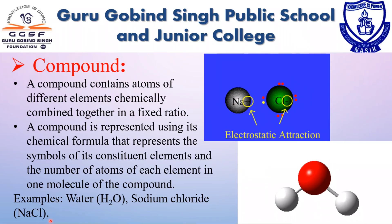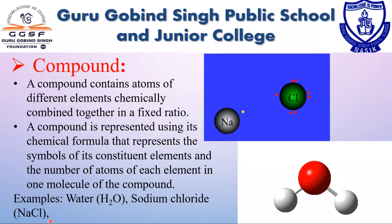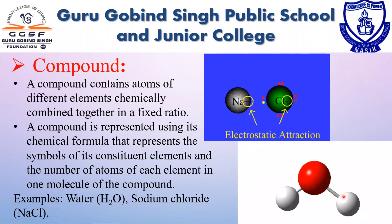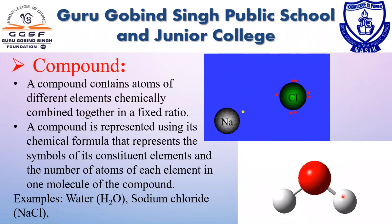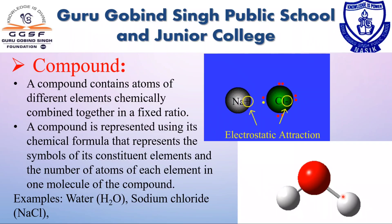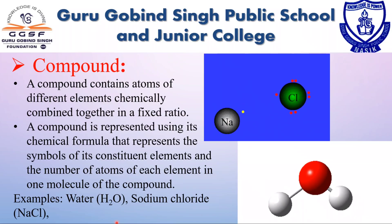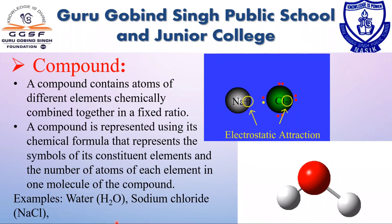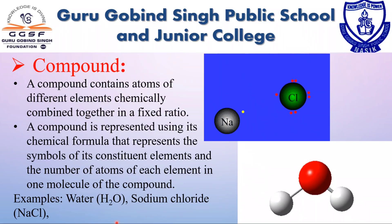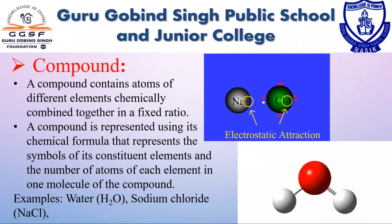Compounds contain different elements in a fixed ratio, arranged in a defined manner through chemical bonds. They contain only one type of molecule. The elements that compose the compound are chemically combined, and the elements in a compound do not always retain their original properties and cannot be separated by physical means. Examples are water, sodium chloride, sodium bicarbonate, etc.